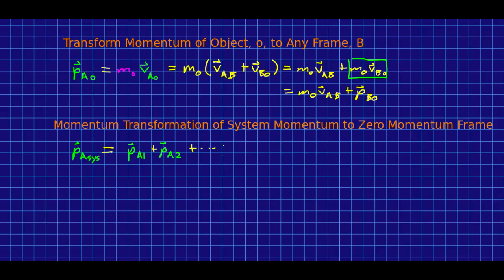Now that we have our momentum transform, let's use it to transform the momentum of a system and see how we get to the zero momentum frame. So, our momentum of a system is just a sum of the momentums of the individual objects. One, two, three, and so on.